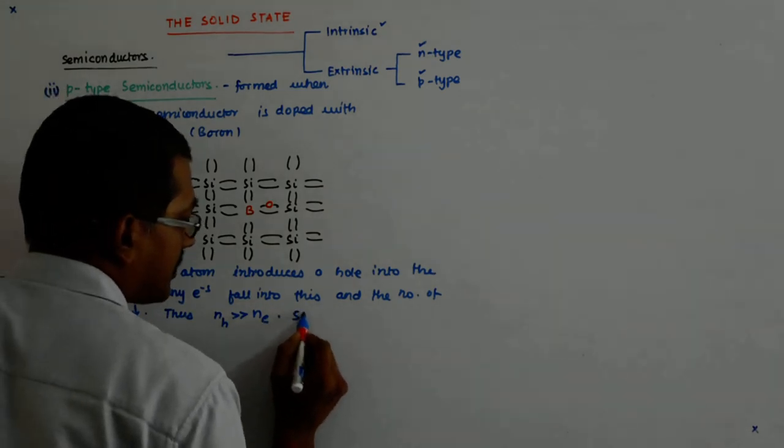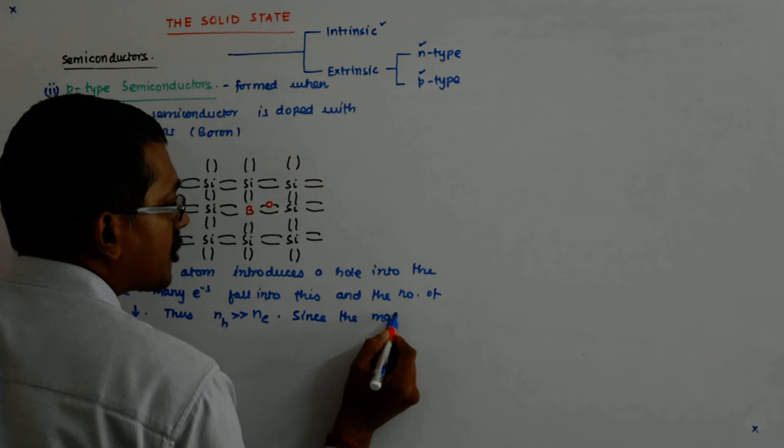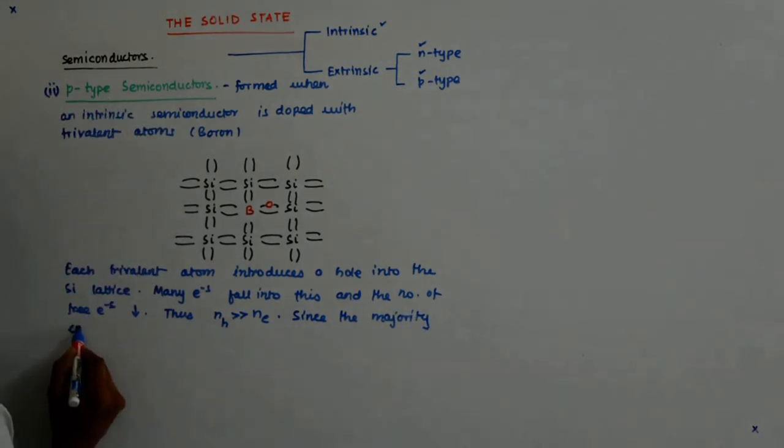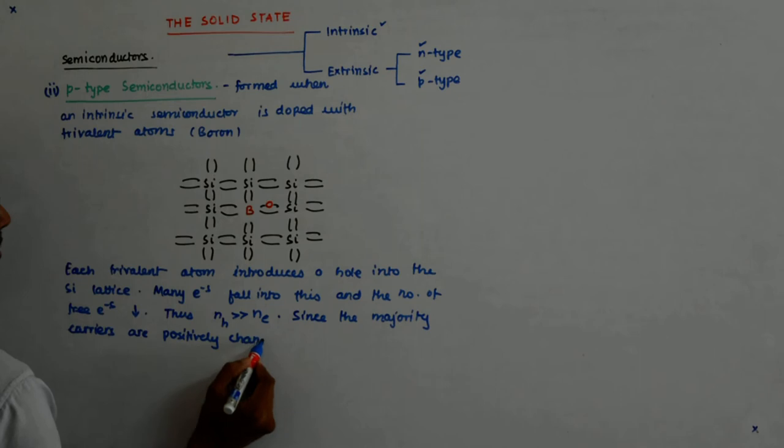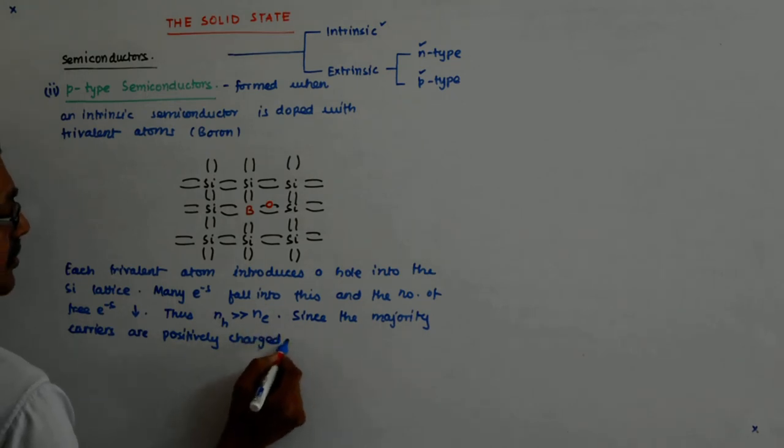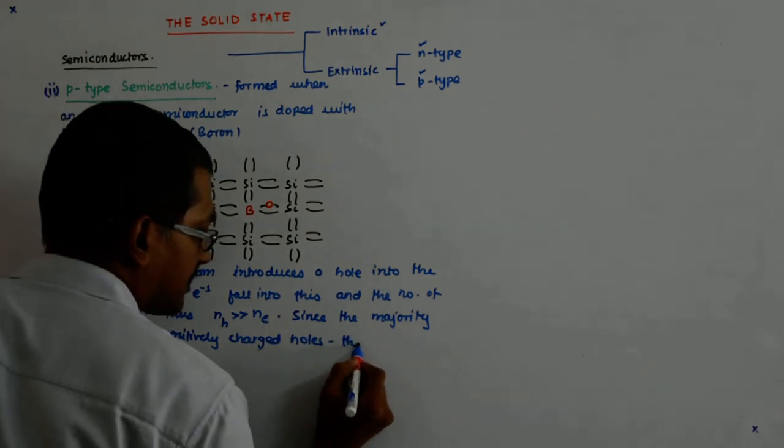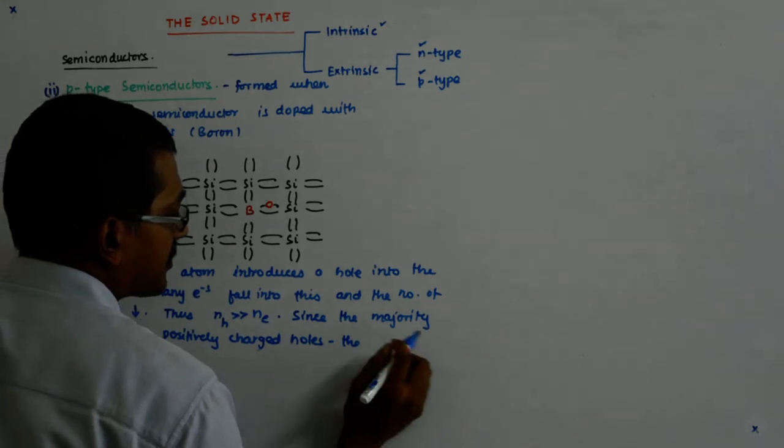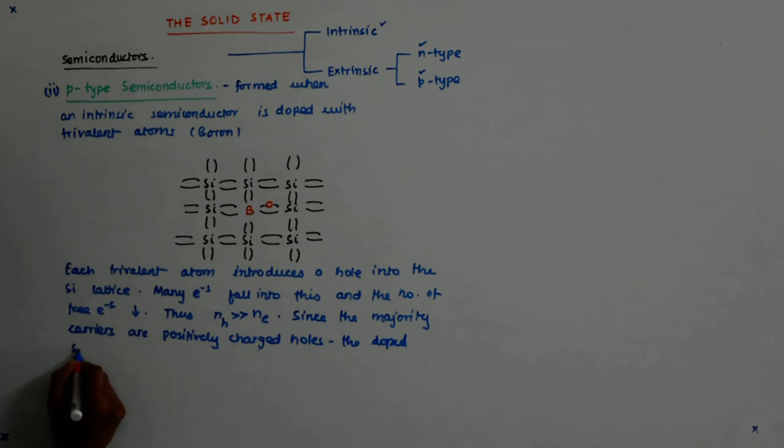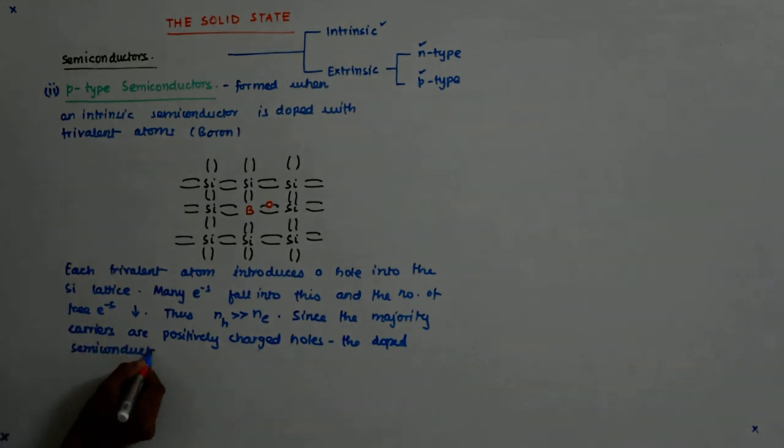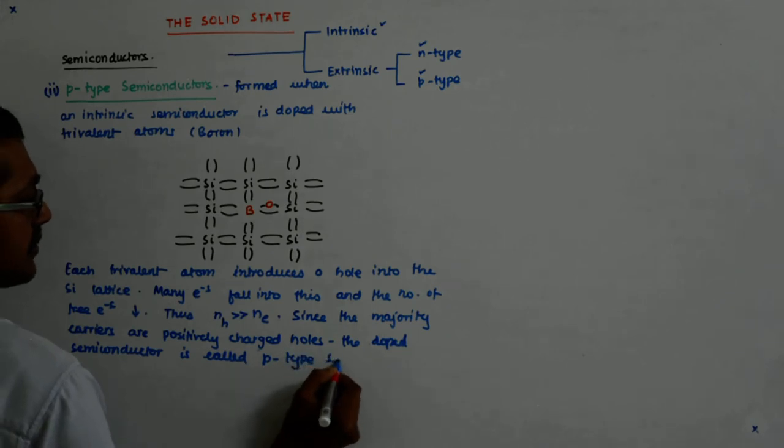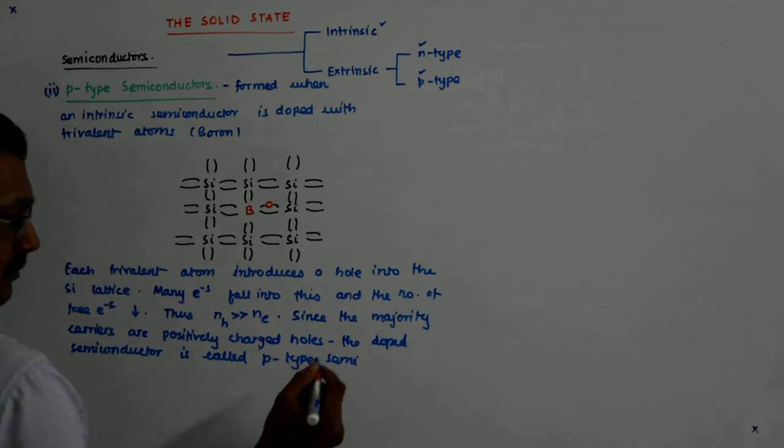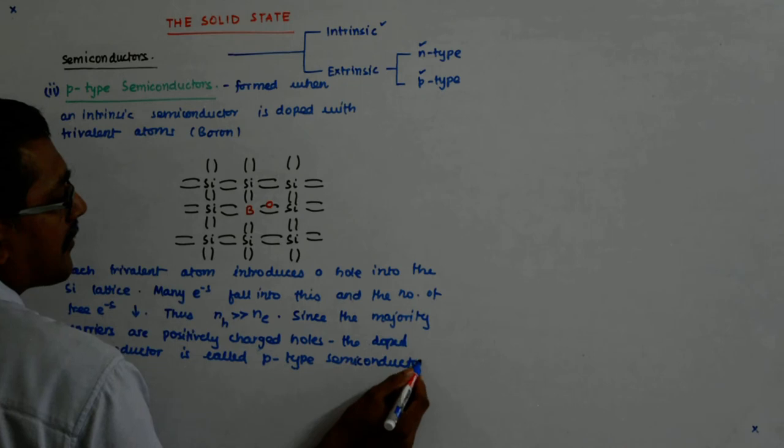Since the majority carriers are positively charged holes, the doped semiconductor is called P-type semiconductor.